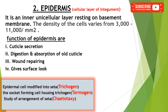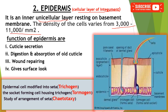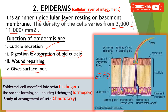The second layer is the epidermis, which is the cellular layer of the integument, mainly made up of a unicellular layer resting on the basement membrane. The density of epidermal cells varies from 3,000 to 11,000 per square millimeter. The main functions of the epidermis are cuticle secretion, digestion and absorption of the old cuticle (especially the endocuticle), wound repairing, and giving surface load. Some epidermal cells are modified into setae — the hair-forming cells are called trichogen cells, and the socket-forming cells on the sides are called tormogen cells.